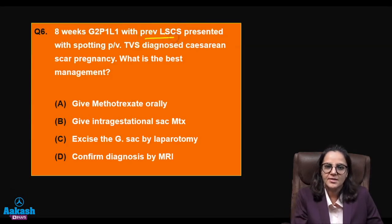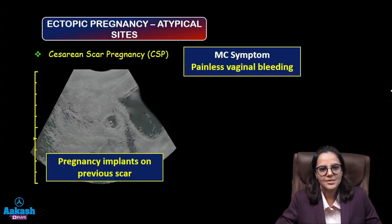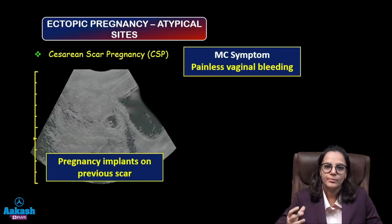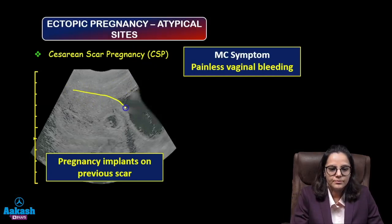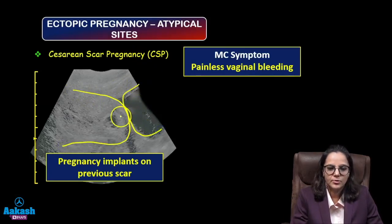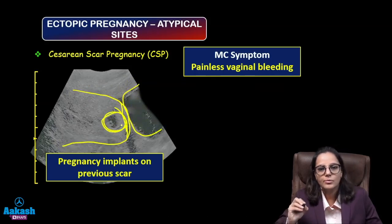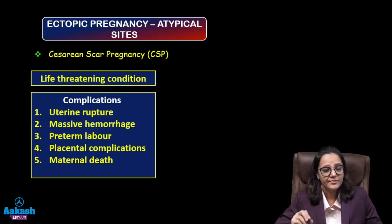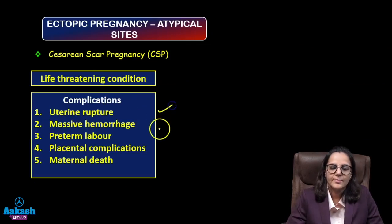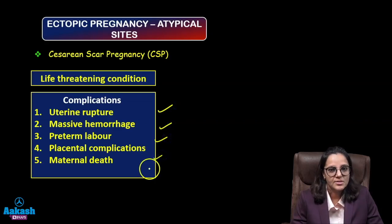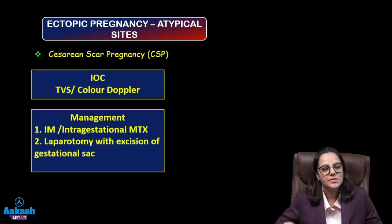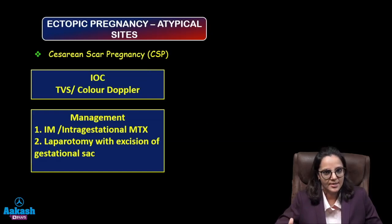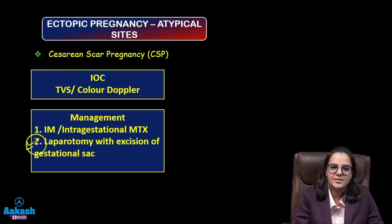Next question: an 8-week second gravida with a previous LSCS presents with spotting per vagina; TVS shows a cesarean scar pregnancy. This is an ectopic implanted on the previous scar. The most common symptom is painless vaginal bleeding. It is a life-threatening condition with complications including uterine rupture, massive hemorrhage, preterm labor, placental complications, and high maternal mortality. Investigation of choice is transvaginal sonography with color Doppler, showing increased vascularity along the scar site.